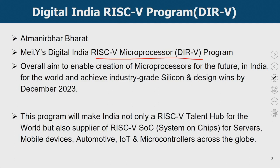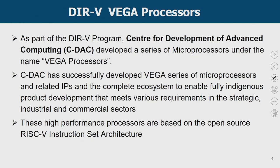The METIS Digital India RISC-V microprocessor program, also known as the DAR-V program, has an overall aim to enable creation of microprocessors for the future, for India and for the world, and to achieve industry-grade silicon and design by December 2023. This program will make India not only a RISC-V talent hub for the world, but also a supplier of RISC-V SoCs for servers, mobile devices, automotive, IoT, and microcontrollers across the globe. As part of this initiative, CDAC developed a series of microprocessors under the name Vega processors, successfully developing the Vega series along with related IPs and a complete ecosystem for fully indigenous product development meeting requirements in strategic, industrial, and commercial sectors.